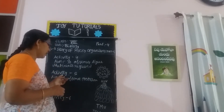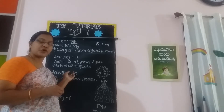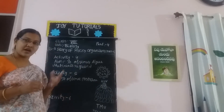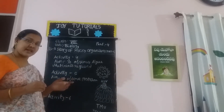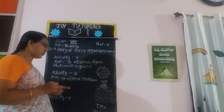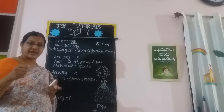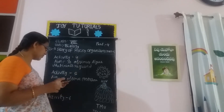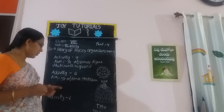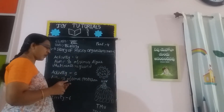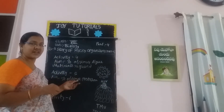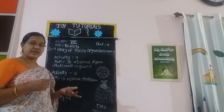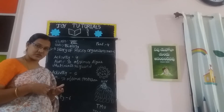Next, to observe protozoa — protozoa are another type of microorganism. We have to collect hay, take a small strand, and observe it under the microscope. That is our Activity 5. The aim is to observe protozoa. Materials required: hay, glass slide, coverslip, and microscope.